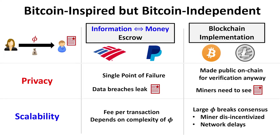In terms of scalability, any number of transactions will incur fees, so you want to minimize the number of transactions and the size of conditions, since the transaction fee may depend on the condition's complexity. In the blockchain implementation, a large condition can actually break consensus: if the condition is large enough, miners aren't incentivized to check it and may reject your transaction, affecting time to consensus.